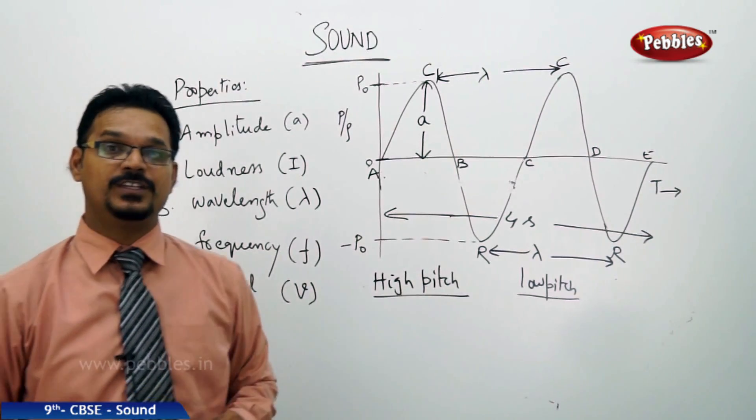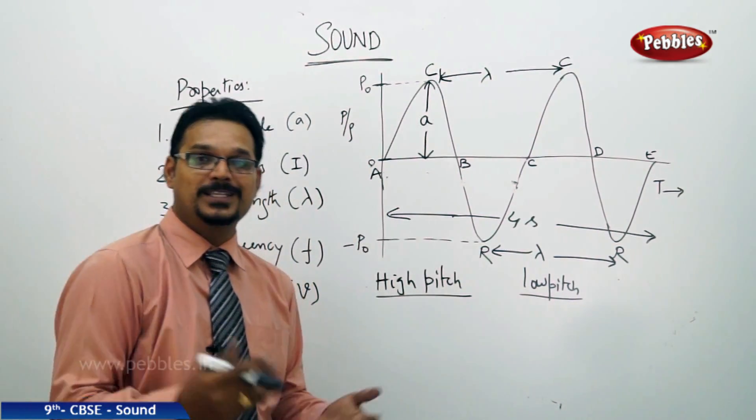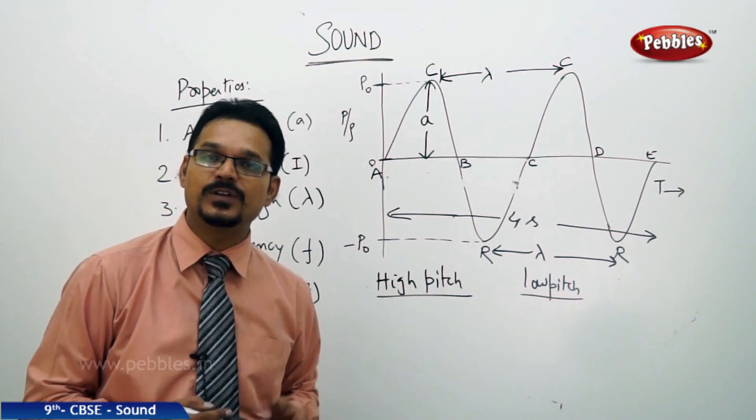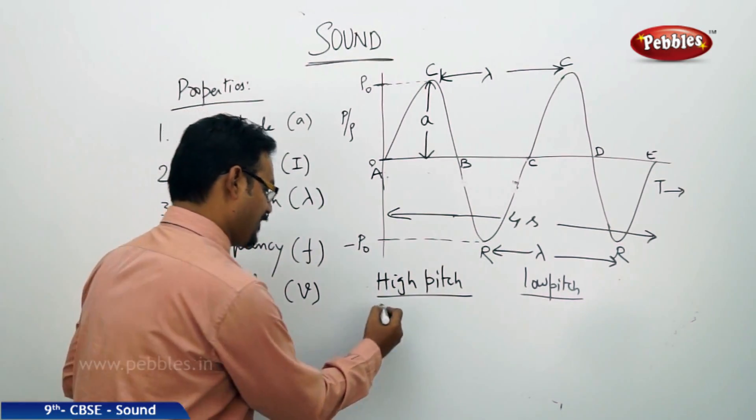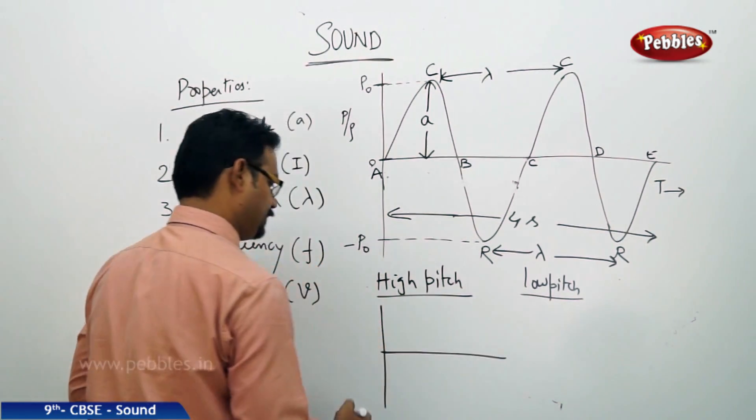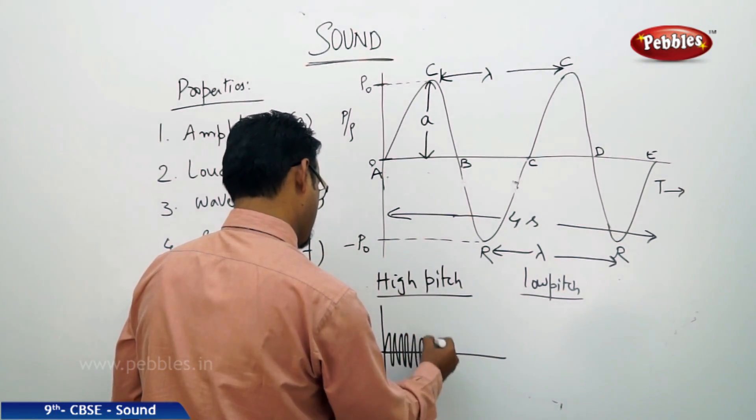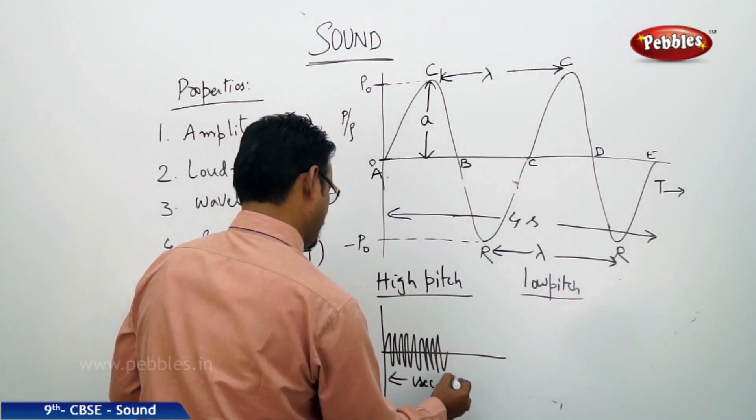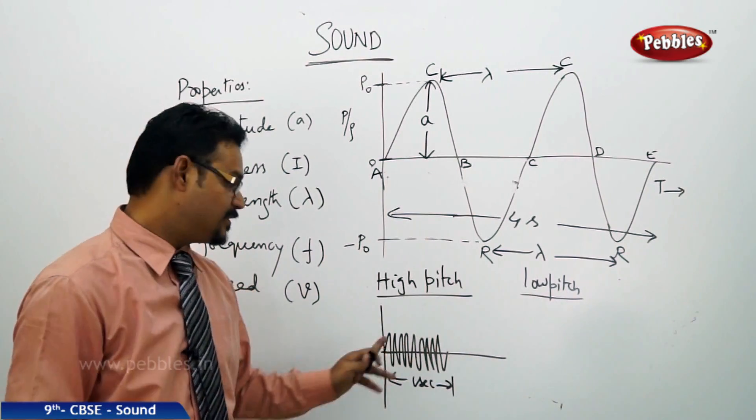Now, based on the frequency, you have two types of waves: high pitch and low pitch. What is the high pitch? The sound wave having high frequency is called high pitch. Let me show you graphically. See here.